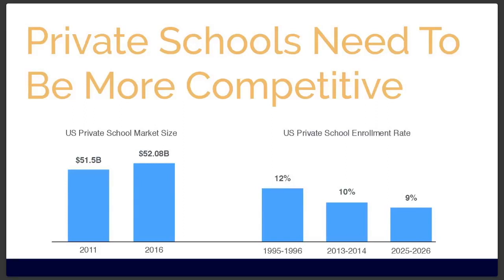What's happening in the market: the overall market size in tuition dollars in the US has actually increased by 25 percent in the last 25 years. At the same time, US private school enrollment rates have been going down and are forecasted to go down more. That's a direct result of increasing competition. What used to work — just having a great school and relying on word of mouth to keep it full with a good wait list — a lot of schools are finding that doesn't work anymore.